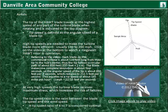The tip speed ratio is the ratio between the blade tip speed and the wind speed itself. It gives you an idea of how quickly the tip is moving relative to the wind blowing into it — the relationship between incoming wind speed and the resultant speed of the tip of the blade.